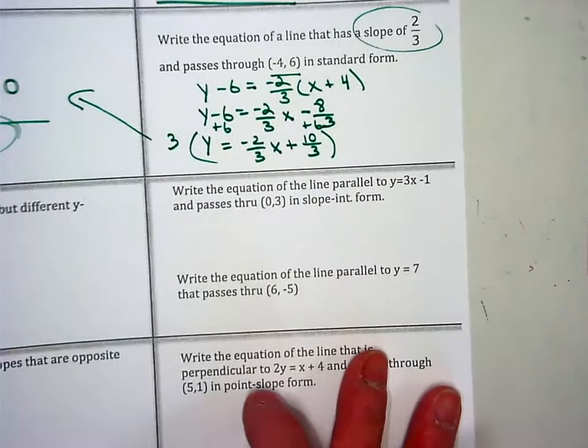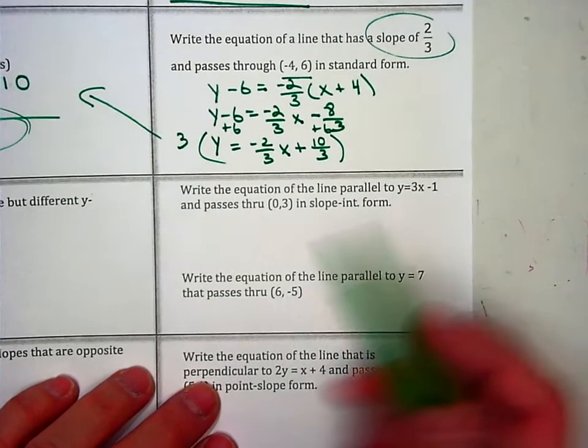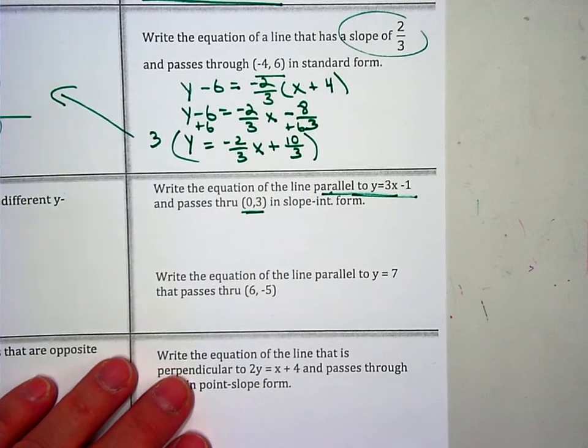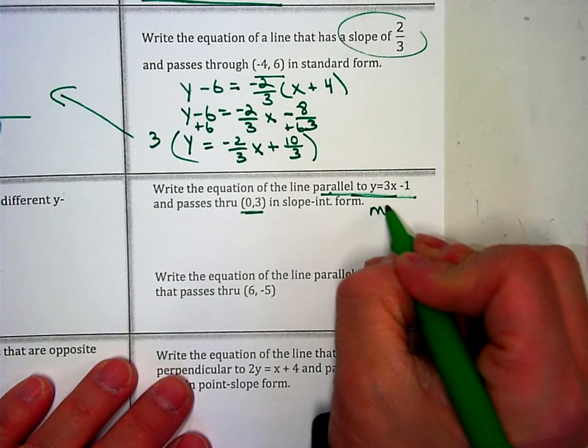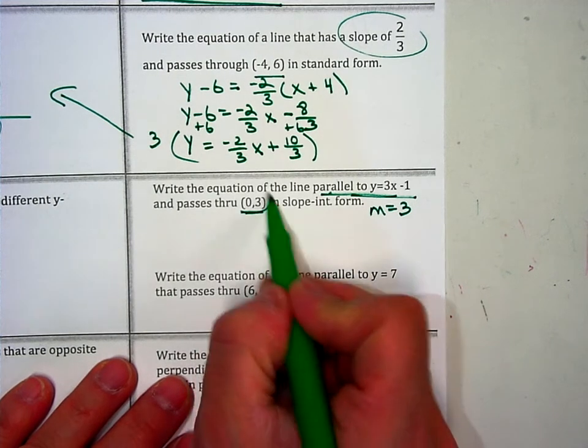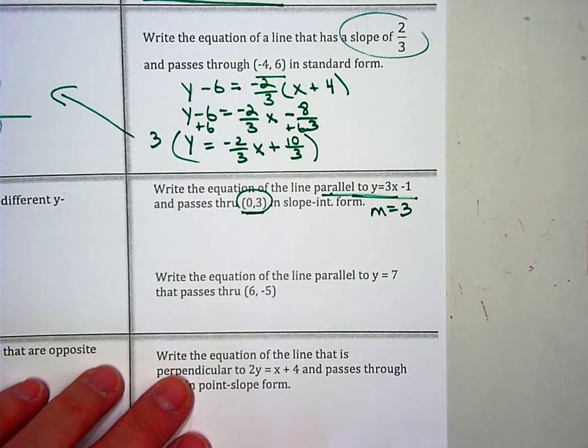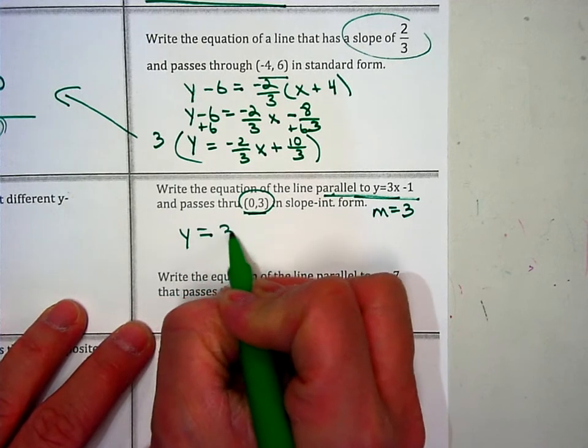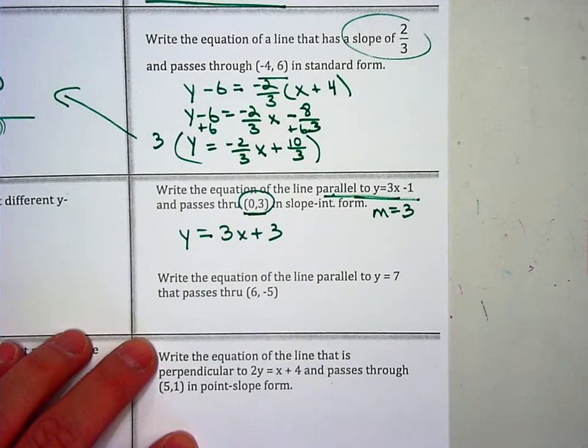Okay, next, parallel lines. I want the equation of a line that's parallel to this one. And here's my new point in slope-intercept. I'm going to use the same slope. So I'm going to use 3. And notice that my point is (0, 3). And this is your y-intercept. So this one, I can go straight to here. And you're done.